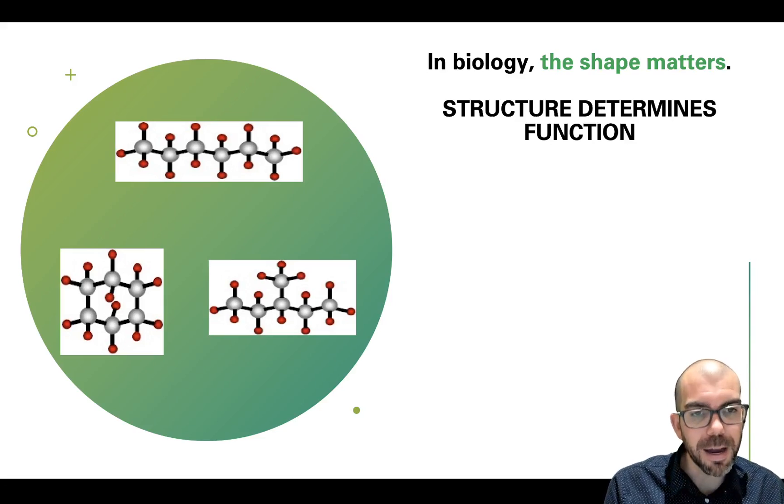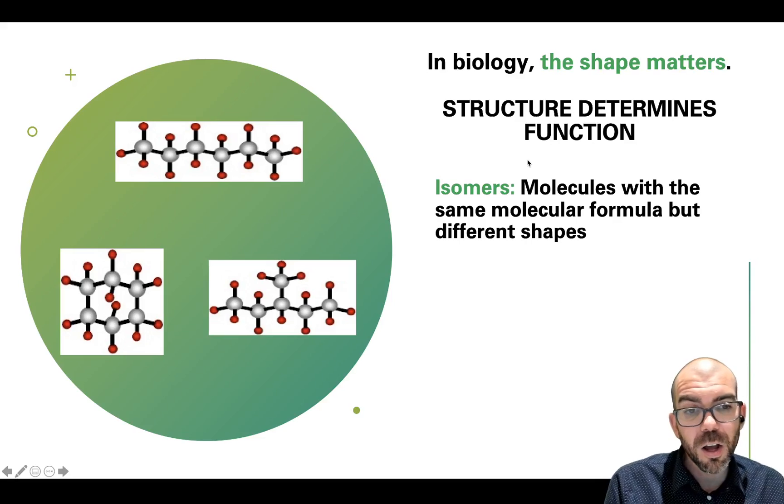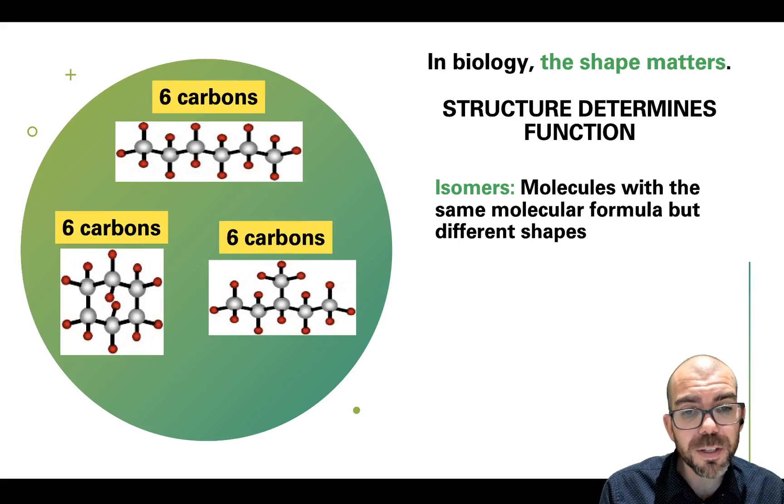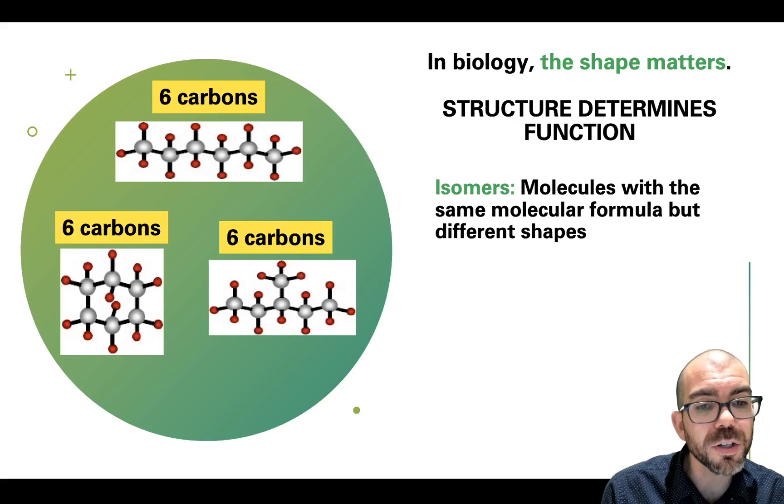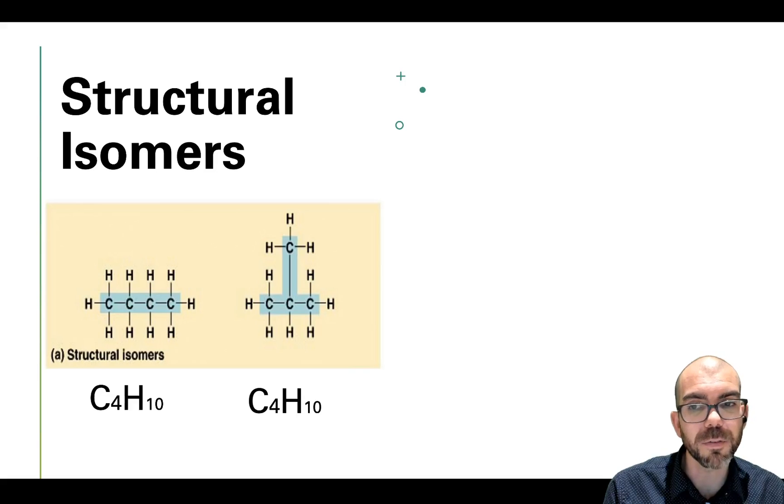So in biology, the shape matters. What you're going to hear again and again in this class is that structure determines function. Whatever the structure is of a living thing, that's going to dictate what it does. For example, here I have three carbon molecules. They're hydrocarbons, surrounded by hydrogen, and they all have different shapes. This one's in a line, this one's in a ring, this one's got a little bit protruding in the middle. These molecules we refer to as being isomers. They're molecules with the exact same molecular formula, but have completely different shapes. Each of these have six carbons surrounded by hydrogens. If I were to write the molecular formula out, it would be identical. But since they all come in a different shape, they're all going to do a different thing. Structure determines function. So we need to understand the variety and diversity of these isomers, how those different shapes cause different functions.